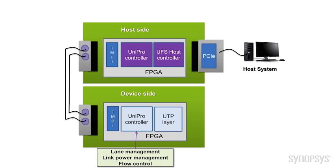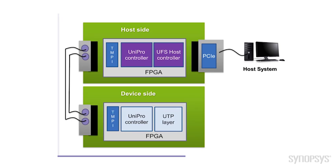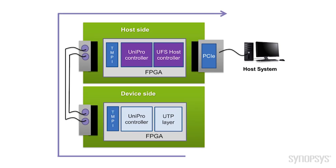The UniPro controller on the device side does a similar job as on the host side. Then the UTP layer receives the SCSI command and carries out the SCSI read/write operation by accessing the non-volatile memory as needed. It then creates a UPIU response for the host. Finally, the response gets transferred to the host side to complete the operation.